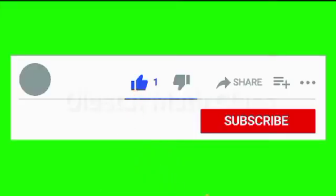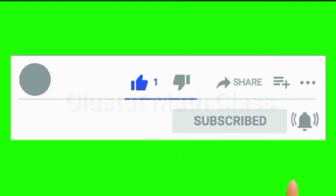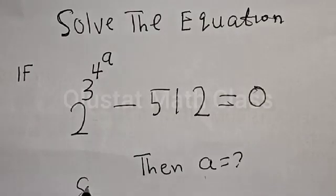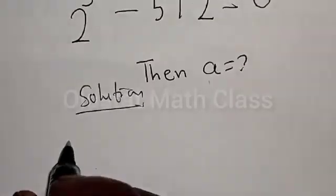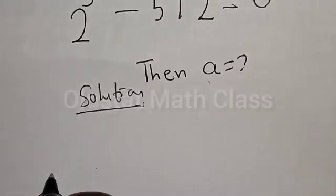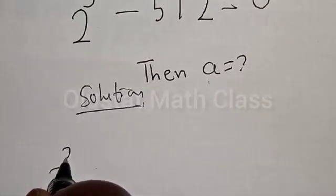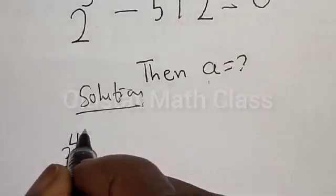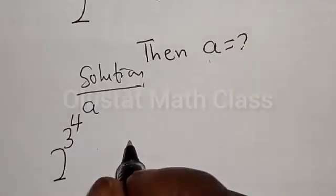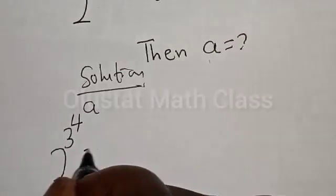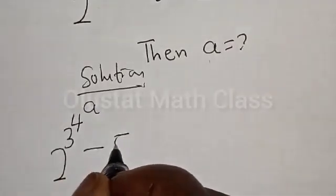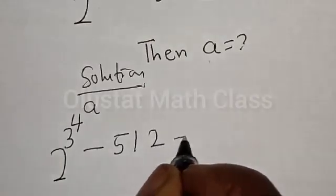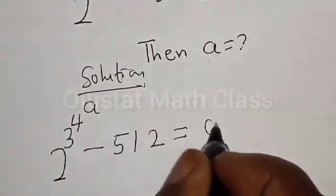But before we proceed, please don't forget to like, share, comment, and subscribe. Thank you. Solution: we have the given equation 2 raised to power 3 raised to power 4 raised to power a, minus 512, is equal to 0.